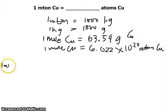1 metric ton of copper, we multiply it by the first conversion factor. Metric ton has to cancel out. 1 metric ton is equivalent to 1000 kilograms in the numerator, so metric ton in the denominator would have to cancel out.